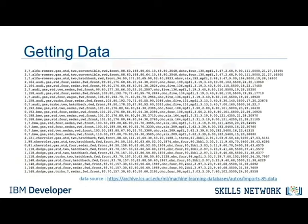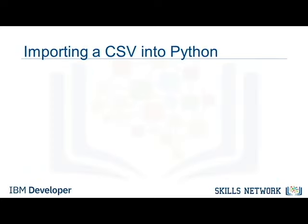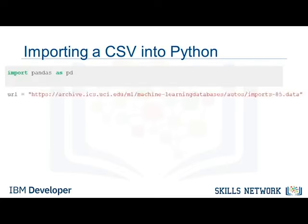Each row is one data point. A large number of properties are associated with each data point. Because the properties are separated from each other by commas, we can guess the data format is CSV, which stands for Comma Separated Values. In Pandas, the read_csv method can read in files with columns separated by commas into a Pandas DataFrame. Reading data in Pandas can be done quickly in three lines: first, import Pandas; then define a variable with a file path; and then use the read_csv method to import the data.